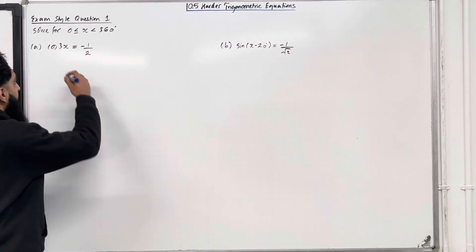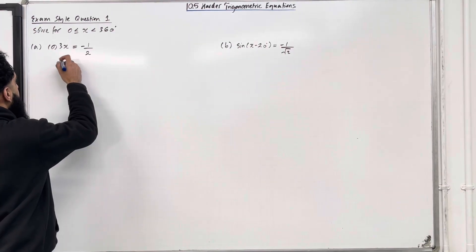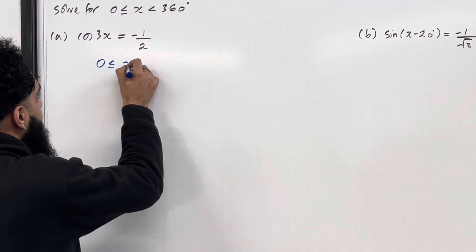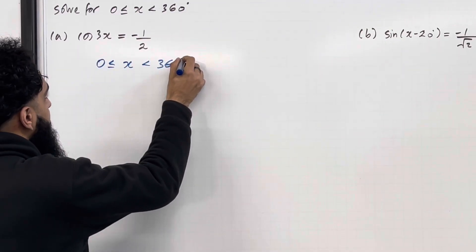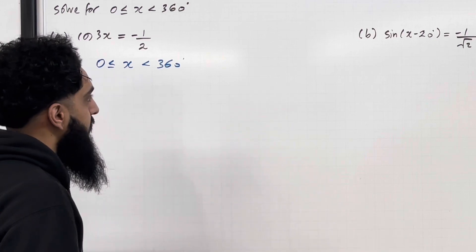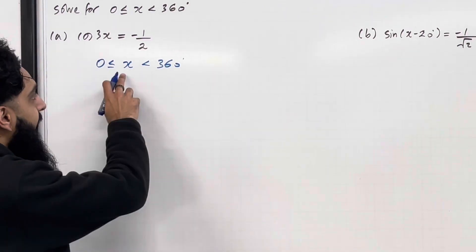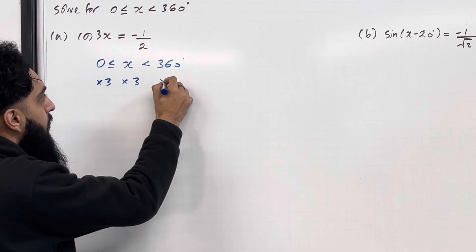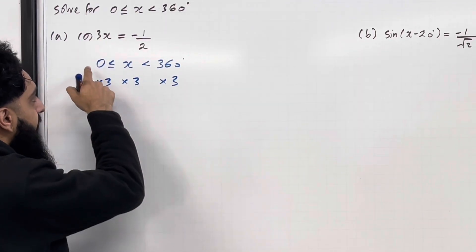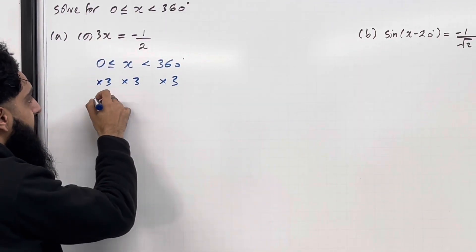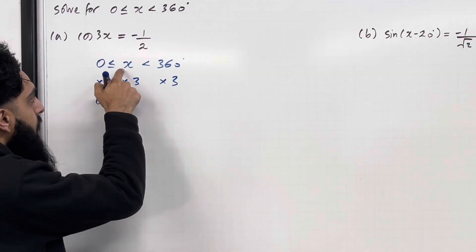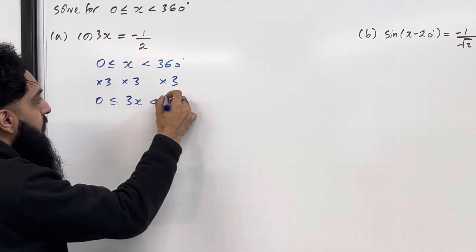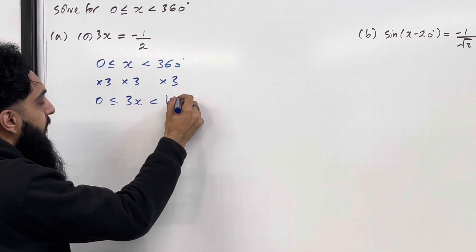I'm going to start by writing down the interval for x. So we've got 0 is less than or equal to x, which is less than 360 degrees. We want to convert the x into 3x, so we have to multiply the entire interval by 3. So I get 0 times 3 is 0, less than or equal to 3x, less than 360 times 3, which is 1080 degrees.